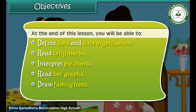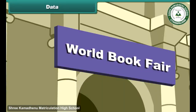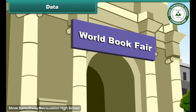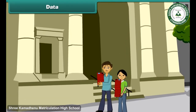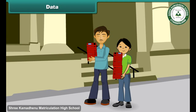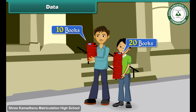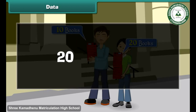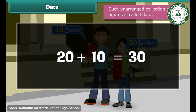Ravi and his father are returning home from the World Book Fair. Ravi has bought 20 books at the fair. His father has bought 10 books. In all, there are 30 books. The figures 20, 10 and 30 are unarranged. Such an unarranged collection of figures is called data.